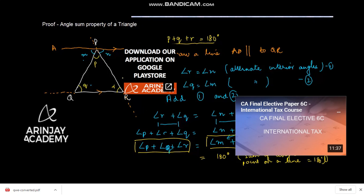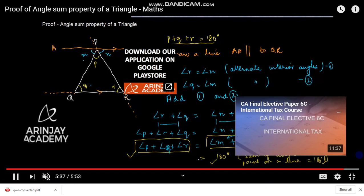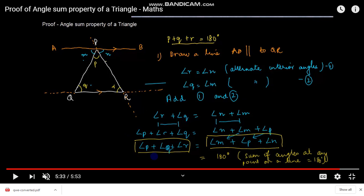Now we can say that angle P plus angle Q plus angle R is equal to 180 degrees. These three angles are the interior angles of the triangle, and their sum equals 180 degrees. Hence, we have proved the angle sum property — that any three interior angles of a triangle sum to 180 degrees. I hope you understand this. In the next class, we will discuss some other property. Thank you.